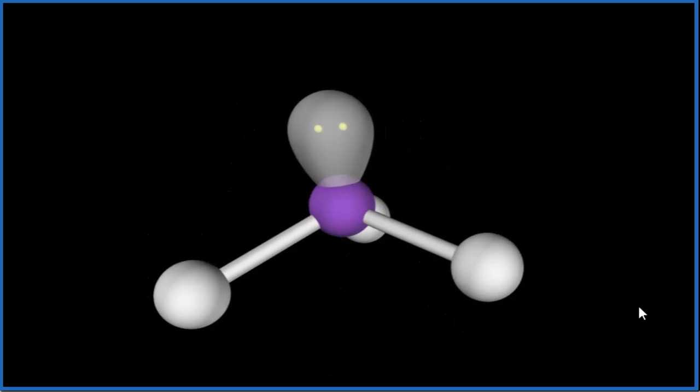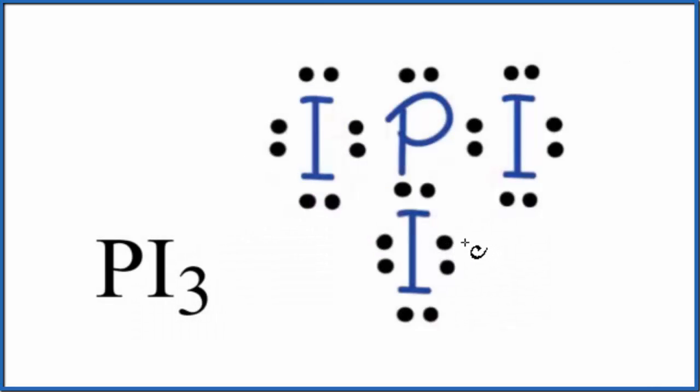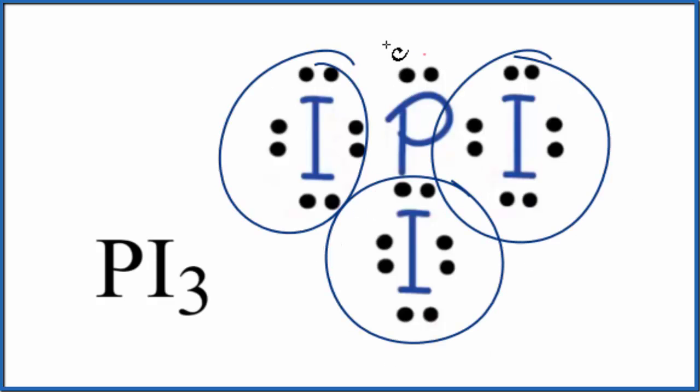Let's go back to our Lewis structure. So back at our Lewis structure, if we couldn't visualize what this looks like in three dimensions, we could do this two other ways. One is we could look at the steric number. So we have one, two, three, four things attached to the central phosphorus atom.